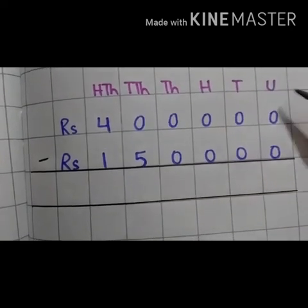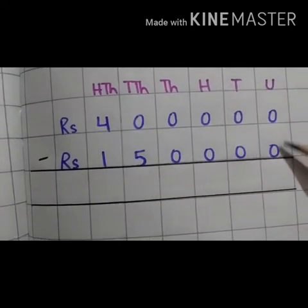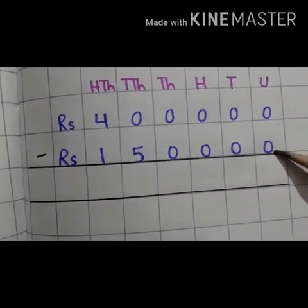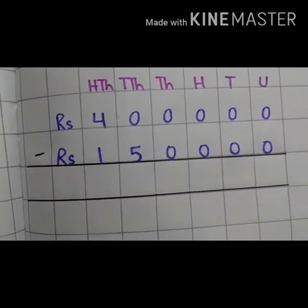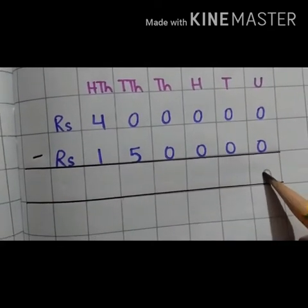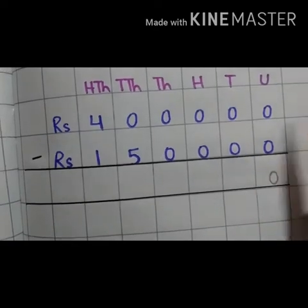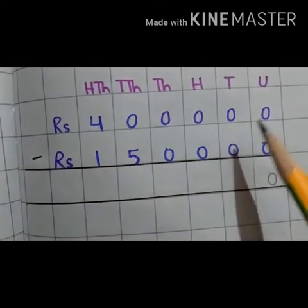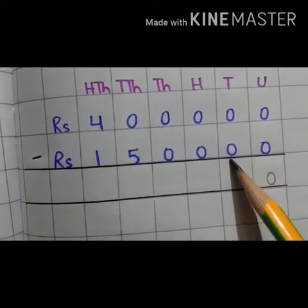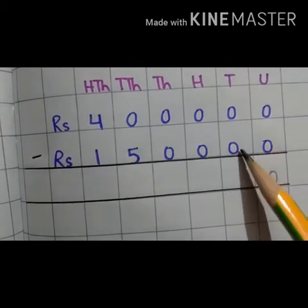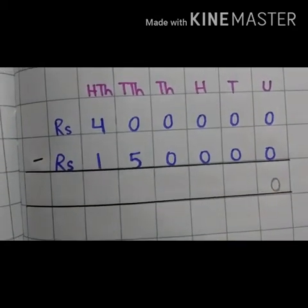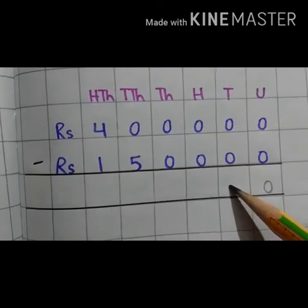So at the unit place we have 0 and 0. So 0 minus 0 is 0. Write 0 in the unit place. Now move to the tenth place. Tenth place we have 0 and 0. So 0 minus 0 is 0. Write 0 in the tenth place.